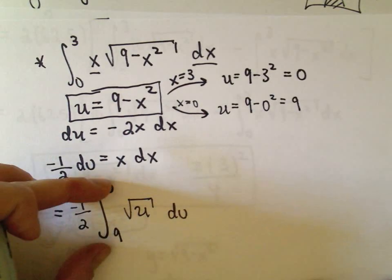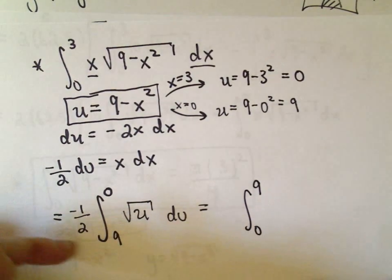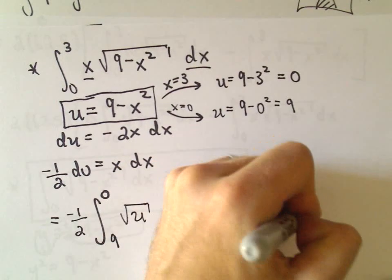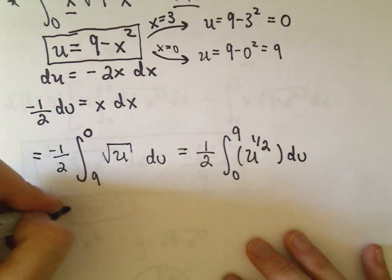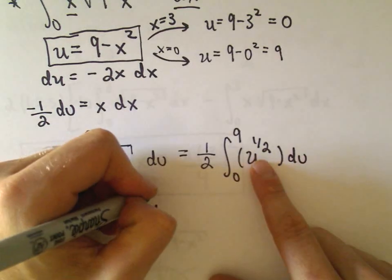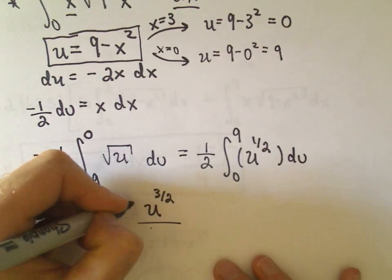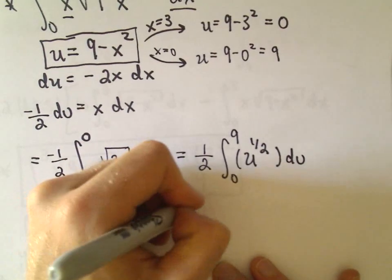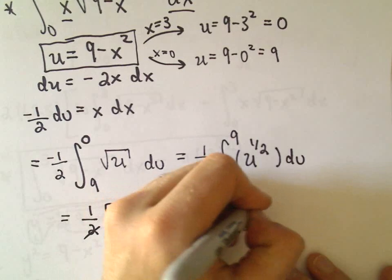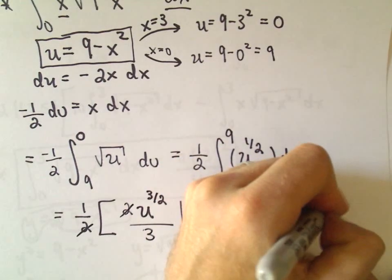We can flip the limits of integration from 9 to 0, changing them to 0 to 9 and flipping the sign. Since it was negative one-half, it becomes positive one-half. We're integrating the square root of u, which is u to the one-half power. To integrate u to the one-half, we add 1 to the exponent giving 3/2, then divide by 3/2 — which is the same as multiplying by 2/3 — evaluated from 0 to 9.